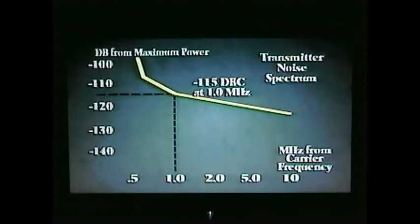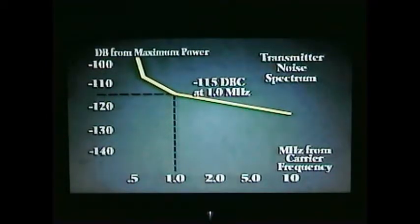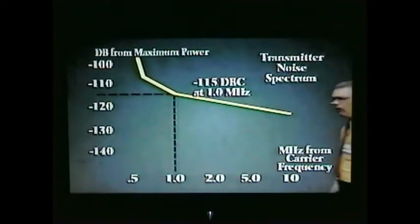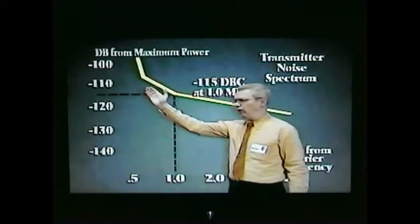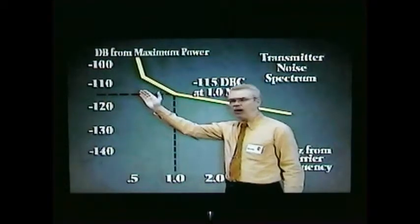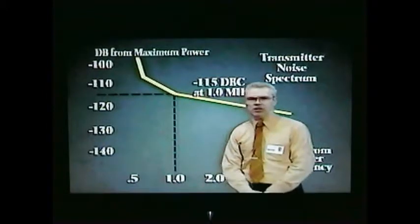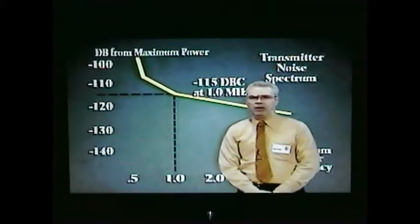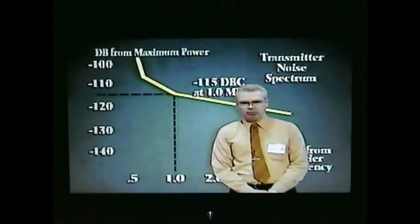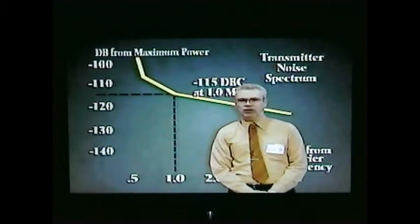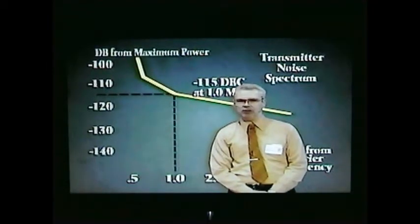A chart or graph of transmitter noise versus frequency spacing is normally available at Motorola Systems Engineering offices. Different transmitter designs have different noise characteristics, so it's necessary to know the model of the transmitter you're considering. Transmitter noise is normally expressed in dB below the transmitter carrier power, sometimes abbreviated dBc, and it's useful for comparing performance of equipment, but we require another factor for systems design.